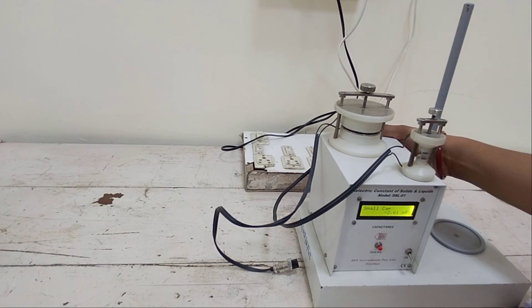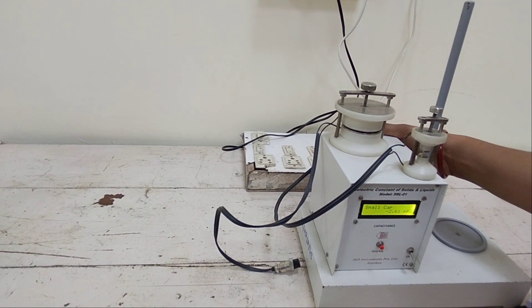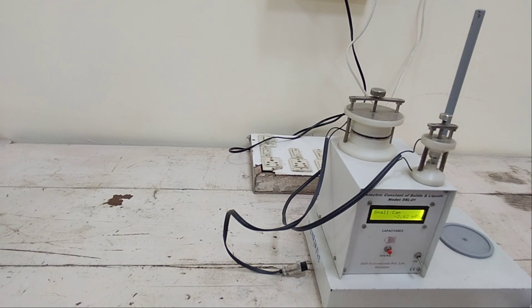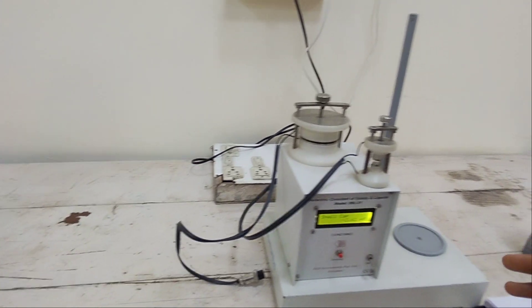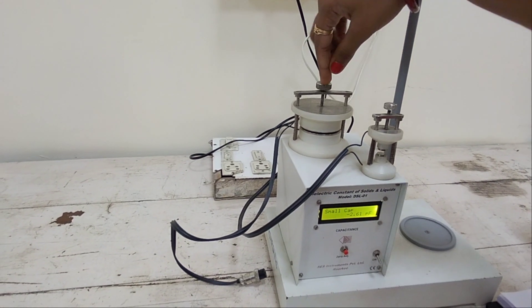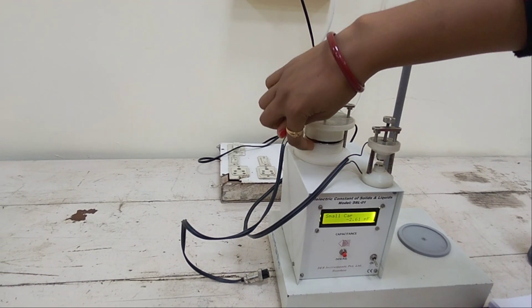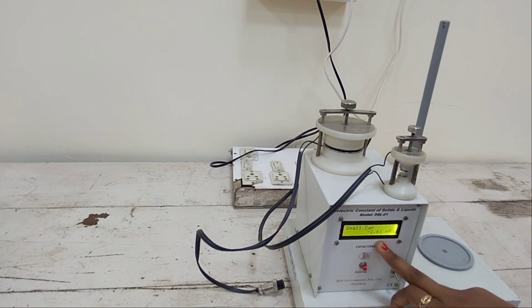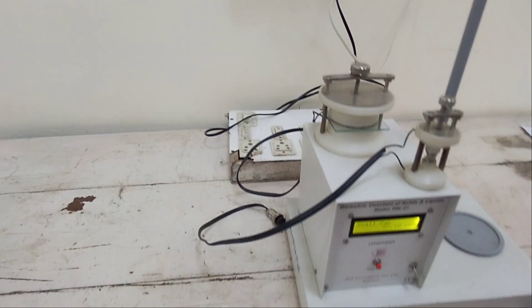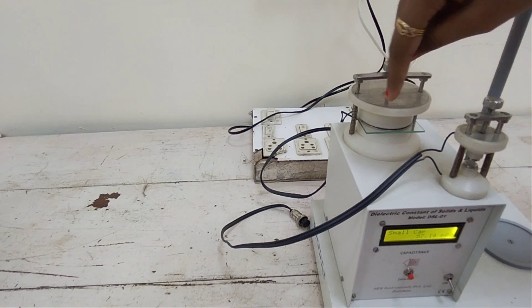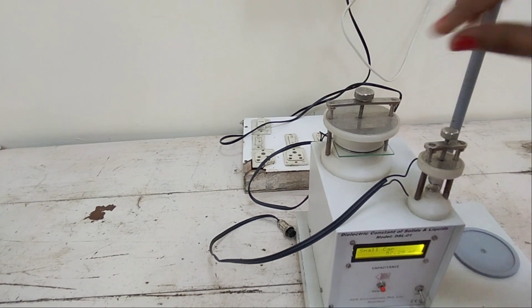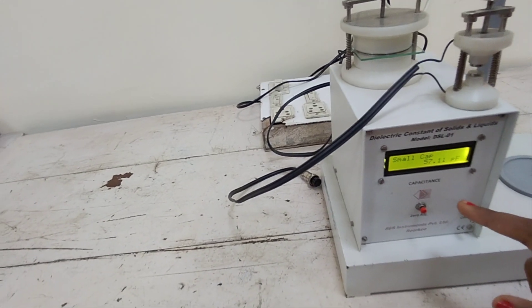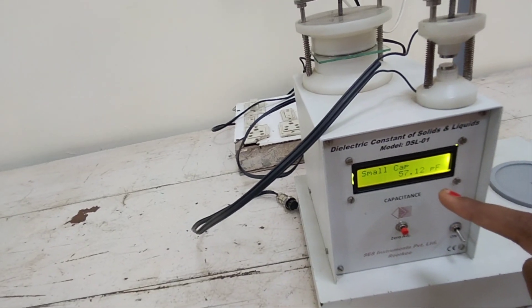You have to read your working principle of this experiment. This is your task. Here we are only explaining the process of finding the capacitance. There are two places in which we can put a plate then measure the capacitance. We have to put the glass plate in between this parallel plate capacitor and measure the capacitance from here. You can see here the value of capacitance is 57.12.